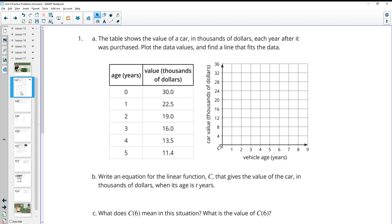Number one gives us a table that shows the value of a car in thousands of dollars each year after it was purchased. It asks us to plot the data values and then find a line that fits the data.